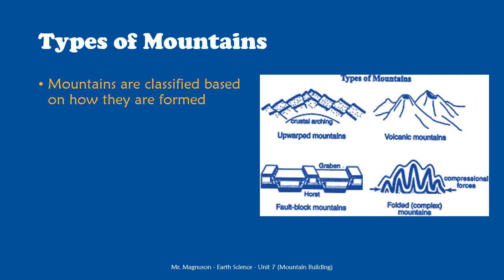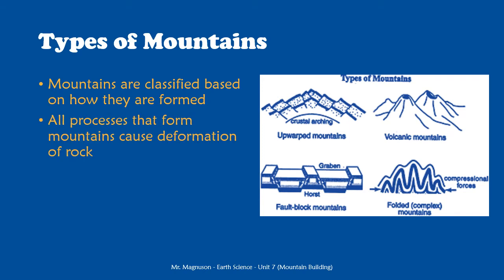Mountains are classified based on how they are formed. We're going to be learning about four different types of mountains, and we are going to be dividing them up based on the processes that form them. All the processes that form mountains are going to cause deformation of rock of some sort, so we could easily relate these different mountain building processes back to our types of deformation — brittle or ductile.